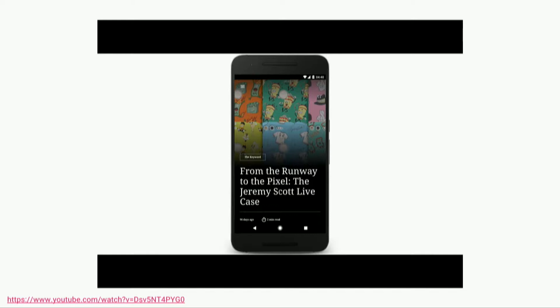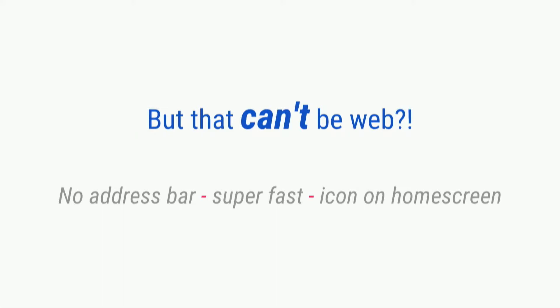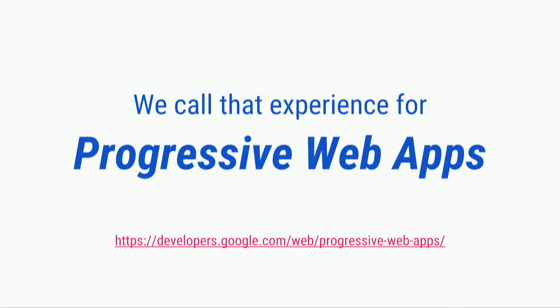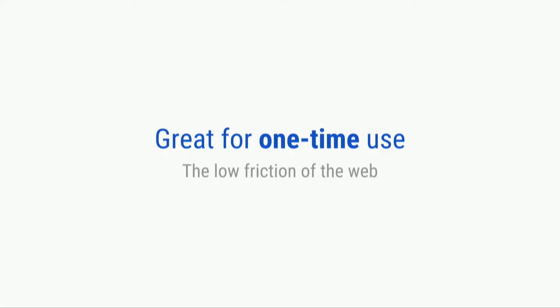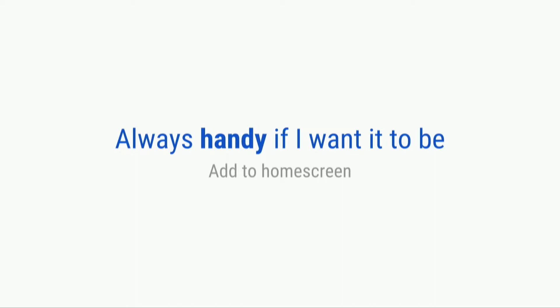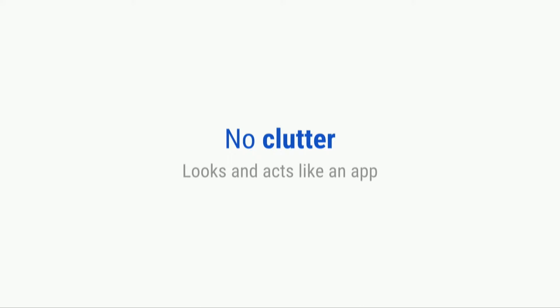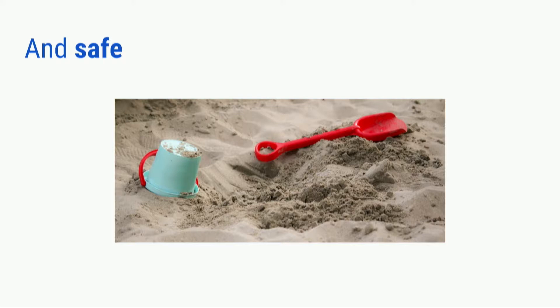Take a look at this example. That's pretty nice, that's pretty fast. But that can't be the web, right? That's a native app — I didn't see any address bar, it launched fast, there was an icon on my home screen. Yes, this is what we call progressive web apps, what we've been working on enabling in Chrome. They're great for one-time usages, the low friction of the web. If you want to engage more, you can add it to your home screen. There's no clutter, no URL bar if you don't need it. And it has the property of the web: it's safe, because the web is designed to be safe out of the box.